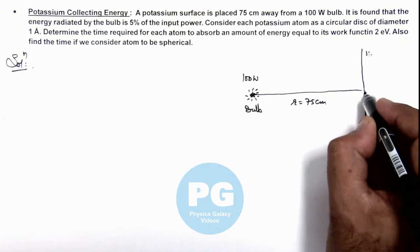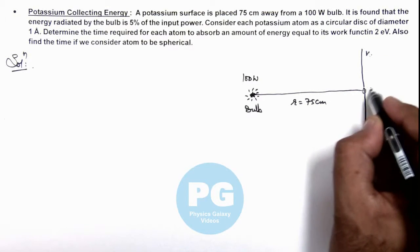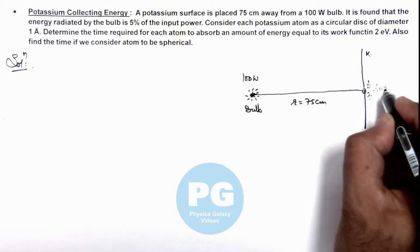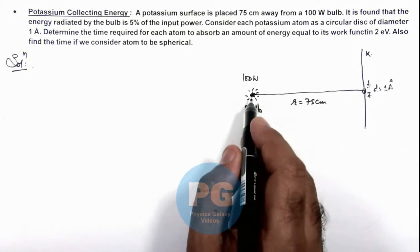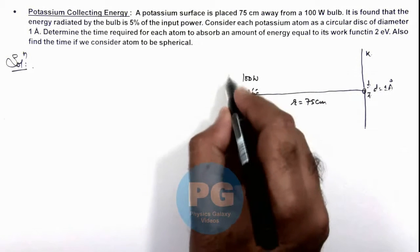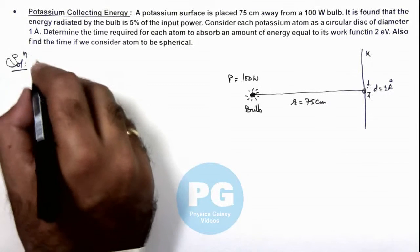A potassium atom of diameter d = 1 Angstrom is placed in front of it. If the power of the bulb is P, we can directly calculate the light intensity.